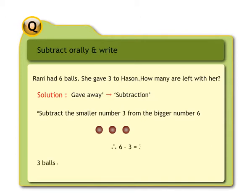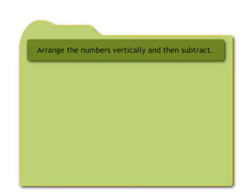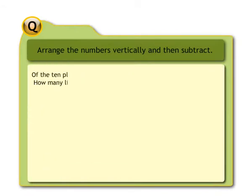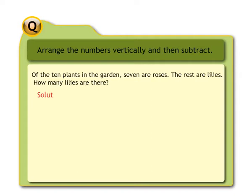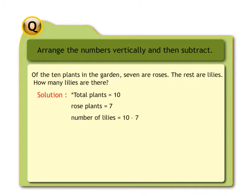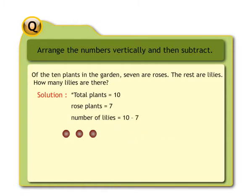So the answer is three balls are left with Rani. Question: of the ten plants in the garden, seven are roses and the rest are lilies. How many lilies are there? Solution: total plants are ten, number of rose plants are seven. Hence number of lilies are ten minus seven. Draw ten dots, score out seven dots — only three dots remain. That is ten minus seven equals three. Hence the answer is three lilies.